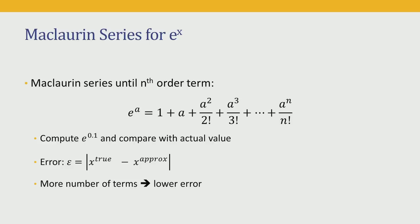Let us look at the first type of error called the Truncation Error. What I have listed here is the Maclaurin series for calculating e to the power x. The Maclaurin series for e^x up to nth order is written as 1 plus a plus a-squared over 2 factorial plus a-cubed over 3 factorial and so on. We are going to compute e^0.1 using multiple terms in this series and compare with the actual value. The error is defined as the absolute value of the difference between the true value and the approximate value.